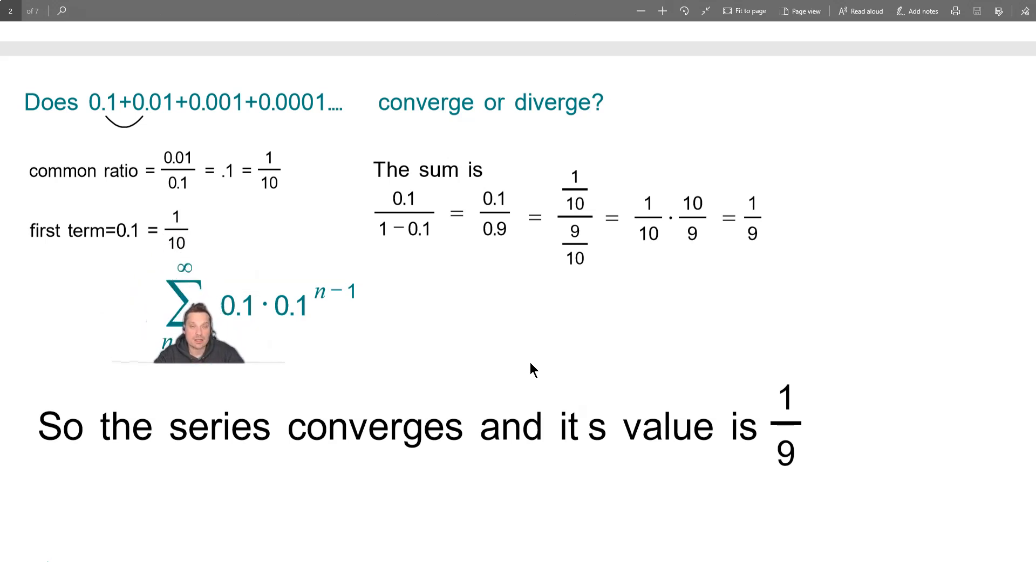Okay, so now you plug this into the basic formula for the sum of a geometric series. It's going to be from n equals 1 to infinity, 0.1 times 0.1 to the n minus 1. If you want, you can check it. For example, if n has the value 1, this would be 0.1 times 0.1 to the 0, which is 0.1 times 1, which would be the original first term. So this checks.